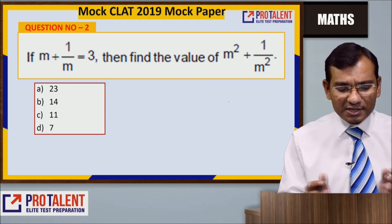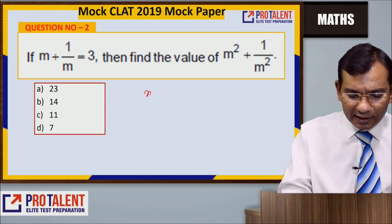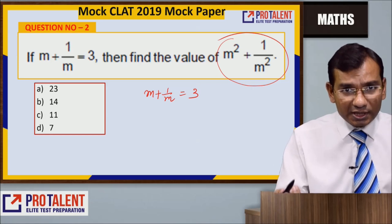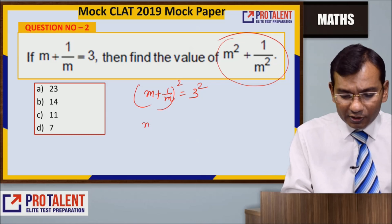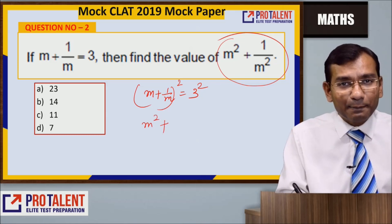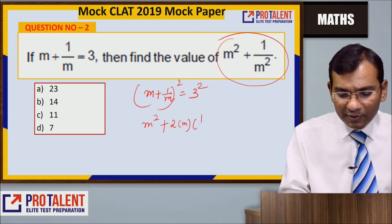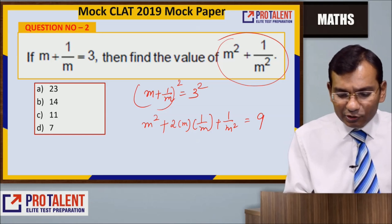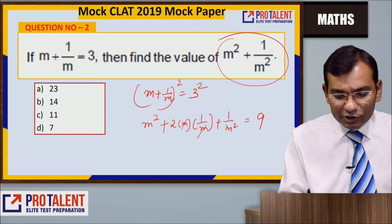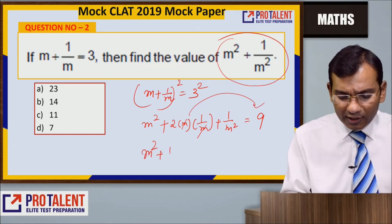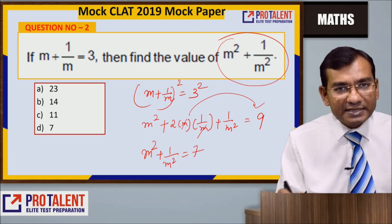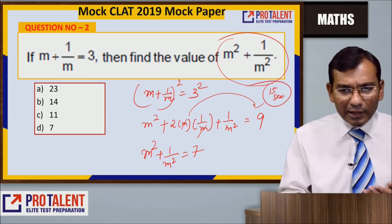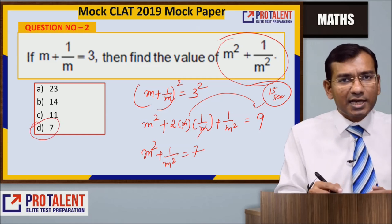Question number 2 is a very standard question: m + 1/m = 3. Find m² + 1/m². This is a standard question — how do we do it? We square the whole expression. Using (A+B)² formula: m² + 2·m·(1/m) + 1/m² = 9. The m terms cancel, so m² + 1/m² = 9 - 2 = 7. This should be a 15-second question — you should not take a lot of time. This is standard and everyone should know it.